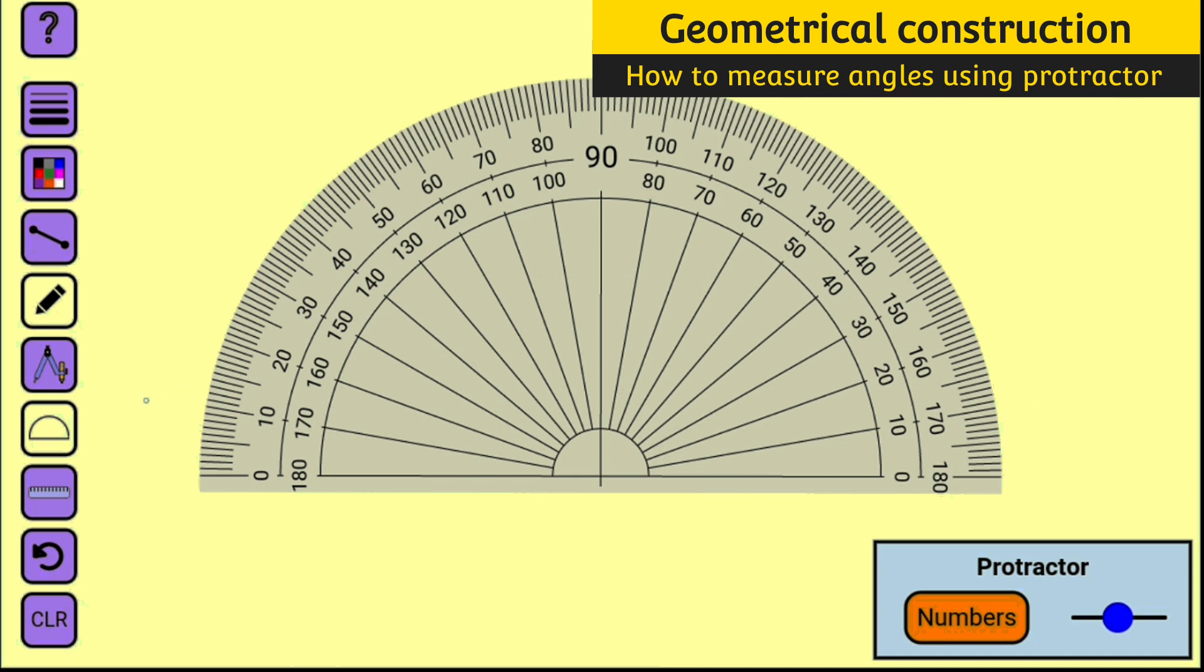You can see we have zero here, we have 10, we have 20, we have 30, so you have to add one extra line. So this line here represents 31 degrees. So now let us construct angles at random to see how we can measure them.